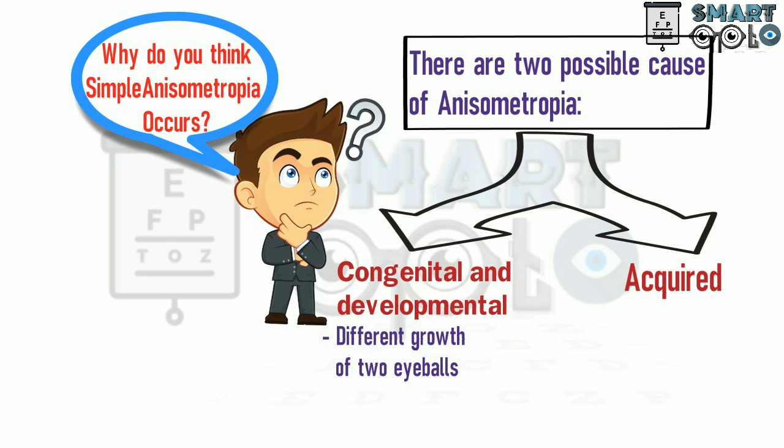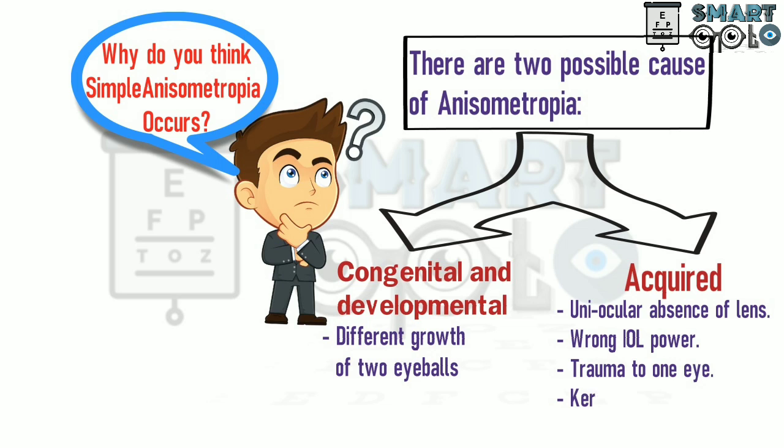The second cause is acquired, which is caused due to uniocular absence of lens, wrong intraocular lens power, trauma to one eye, keratoplasty in one eye, and asymmetric exchanges.